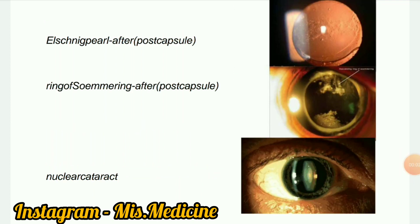Next image: Nuclear cataract. Nuclear cataracts are often a normal progression of aging, as the lens of the eye can yellow and become cloudy with age. A nuclear cataract is most often associated with aging and forms in the center of the lens — the nucleus. Nuclear cataracts can occur in one or both eyes and they often impact distance vision.